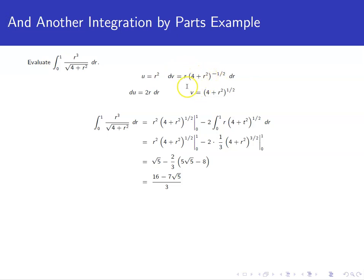My du will have a 2r piece, right? So I need to take one of the powers of r and put it over with the dv, and then my u can be r squared.